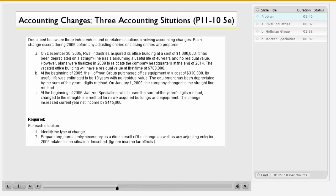For each situation, we're asked to 1. identify the type of change, and 2. prepare any journal entries necessary as a direct result of the change, as well as any adjusting entry for 2009 related to the situation described. And we're to ignore income tax effects.